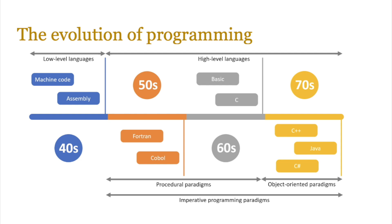Moving to the 60s, that's when high-level languages started to kick in — BASIC and C. Then when we moved towards the 70s, that's when object-oriented paradigms were invented, with C++ and C# being the languages that took hold. And as we moved towards the 80s, 90s, and 2000s, that's where high-level languages evolved to use multiple paradigms and languages like Python came to the fore.